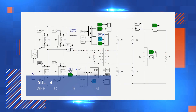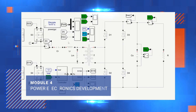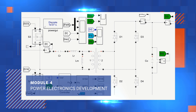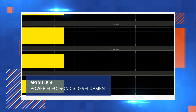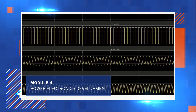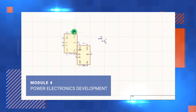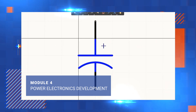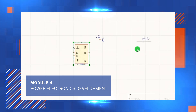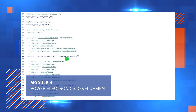In Module 4, you will learn about control systems for power converters. You will simulate and analyze DC-DC, AC-DC and DC-AC power converters using MATLAB and Simulink. You will also learn Altair Embed to control the motor.